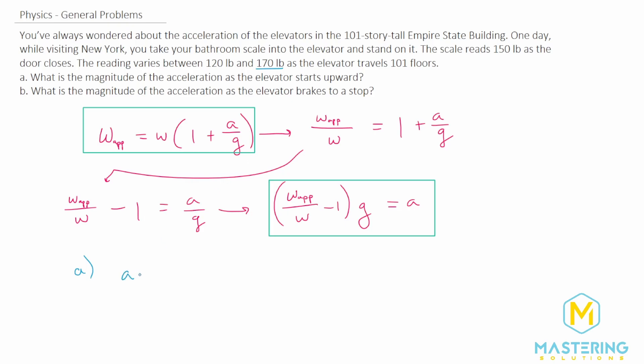So acceleration equals weight apparent, 170 pounds, divided by the actual weight they said is 150, so divided by 150 pounds, and then minus one, all that multiplied by g or 9.8, of course, meters per second squared, equals acceleration.